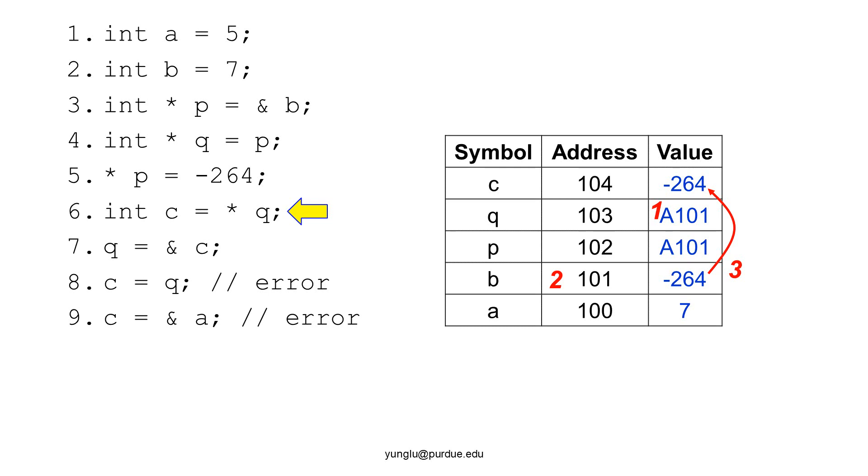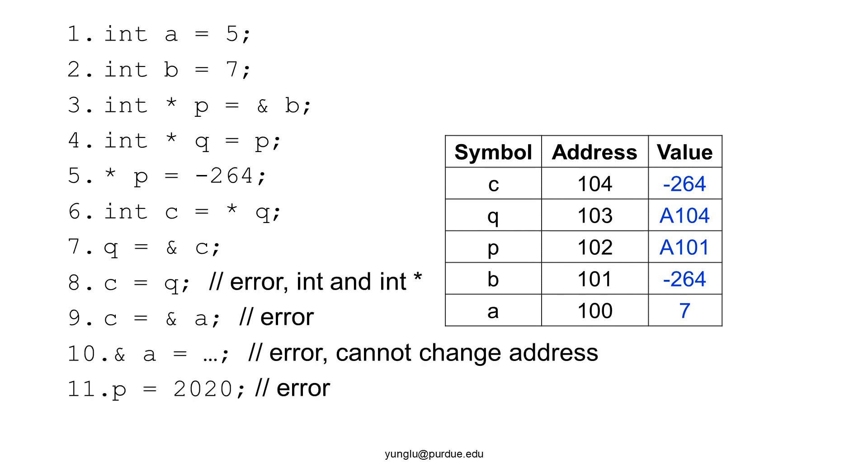The seventh line assigns the address of C to the value of Q. Now Q's value is address 104. The eighth line is an error because their types do not match. C is an integer and Q is an integer pointer. The ninth line is also an error. C is an integer, not a pointer. Thus, we cannot store the address of A in C.